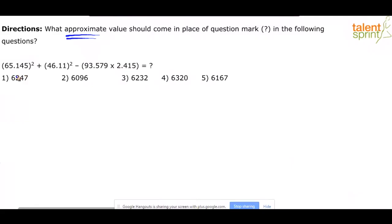The question here actually is not very simple, not like general approximation questions that we get. Here it says 65.145 squared plus 46.11 whole squared minus 93.579 into 2.415 equals to what?